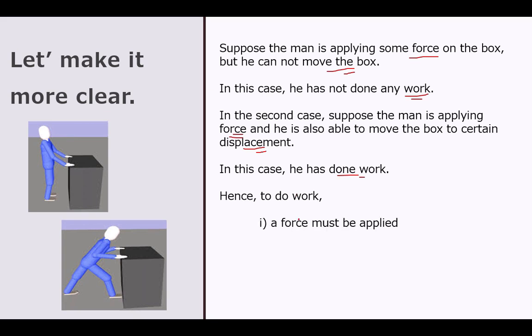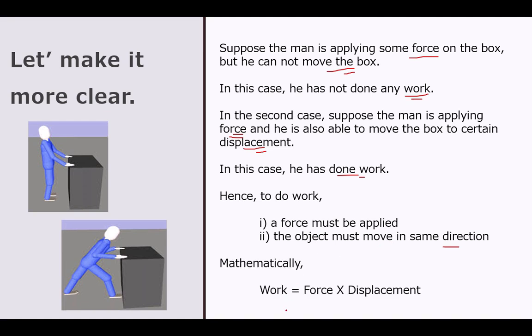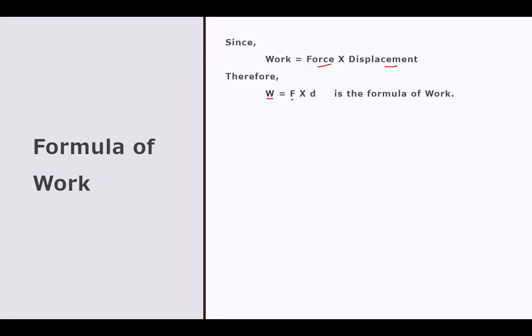Hence, we can say that to do work, there must be application of force and the object must move in the direction of the force. Even if the object is moving in the opposite direction of the force, work is not done. Mathematically, work is equal to the product of force and displacement. So the formula of work is W = F × D, where F means force and D means displacement. This is the formula of work done.